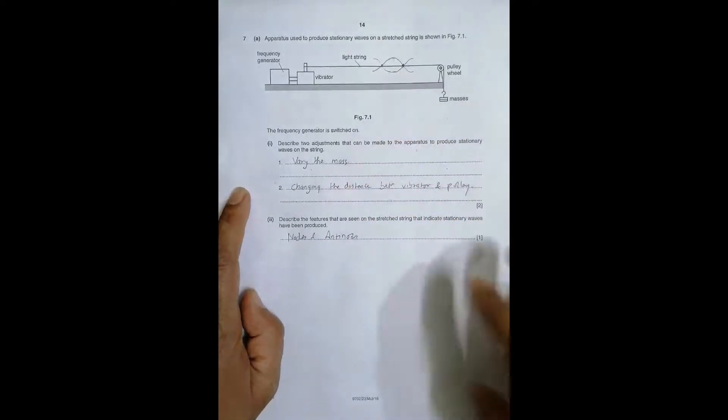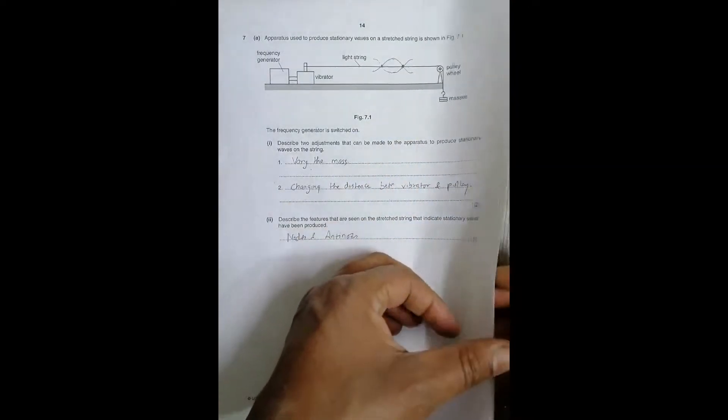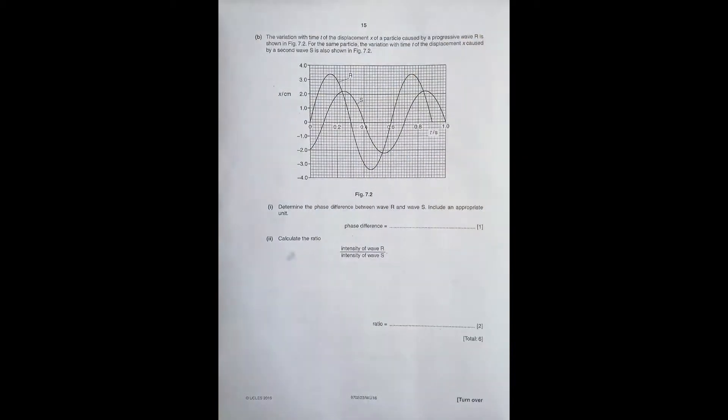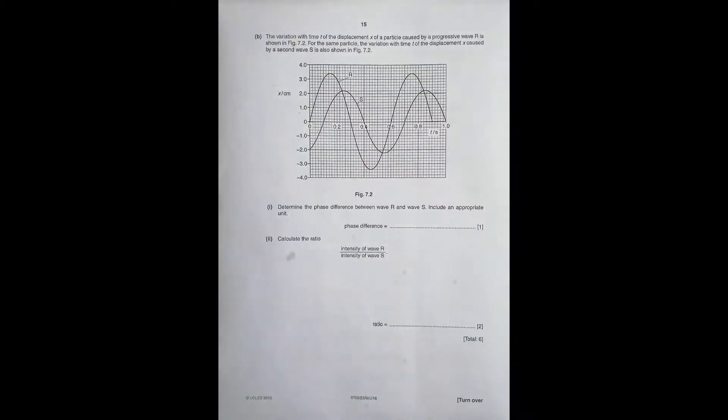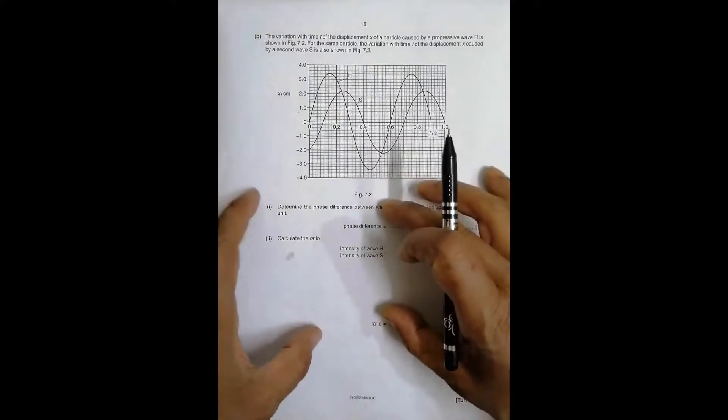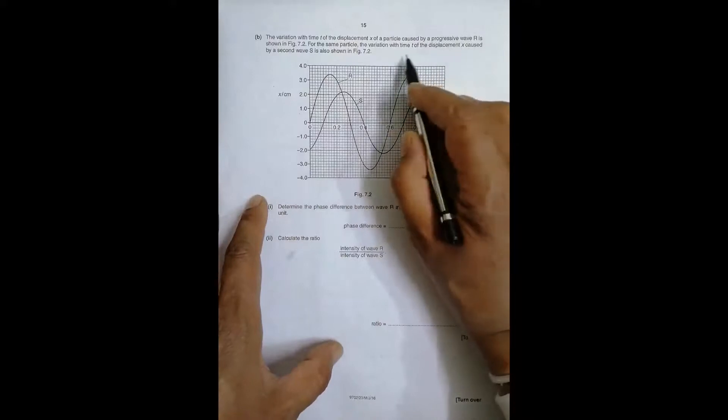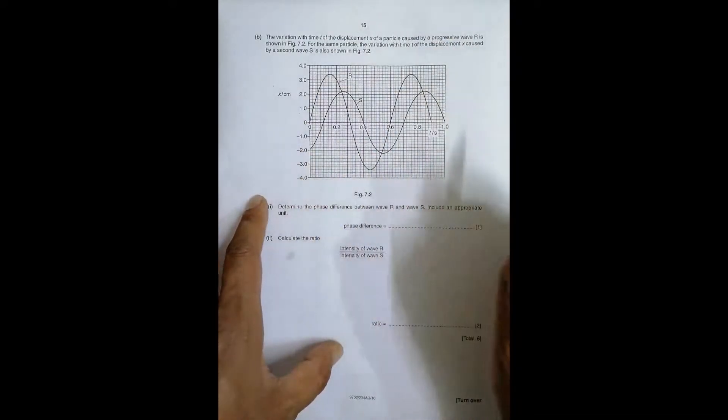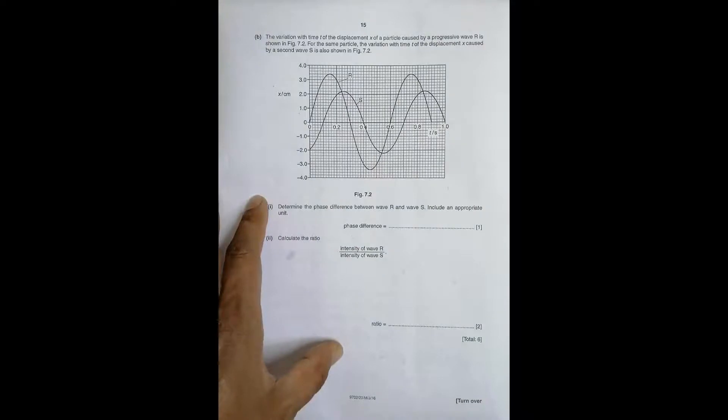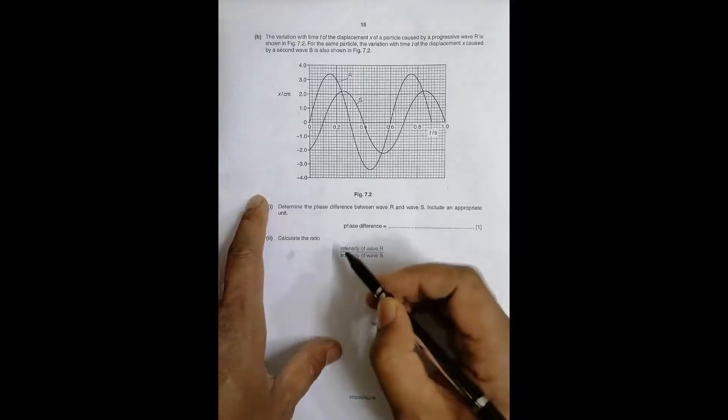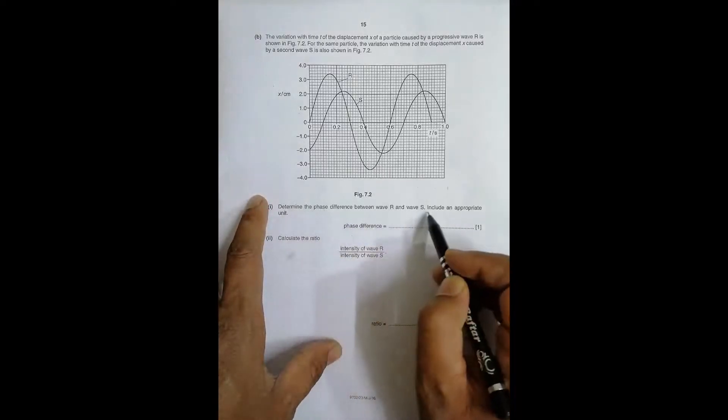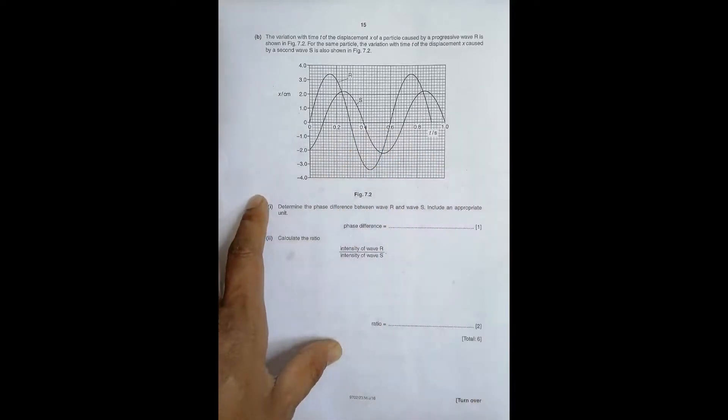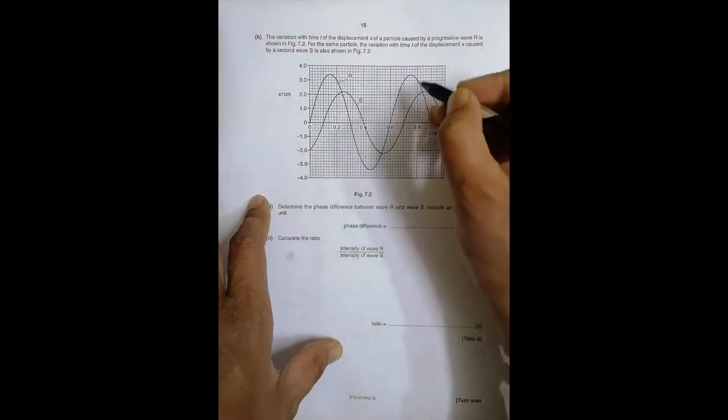Now in the next question, we have the variation with time t of the displacement x of a particle caused by wave R shown like this. For the same particle, the variation with time t caused by wave S is also shown. The same particle, once is given by wave R and next is given by S. The two graphs are given like this. Determine the phase difference between wave R and wave S.